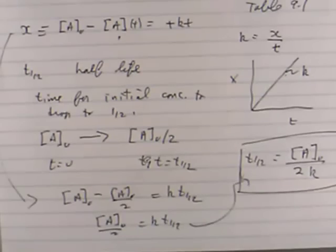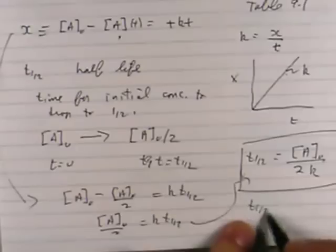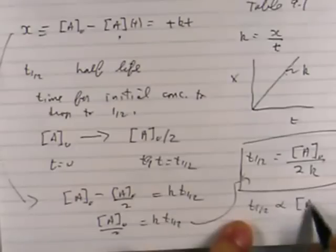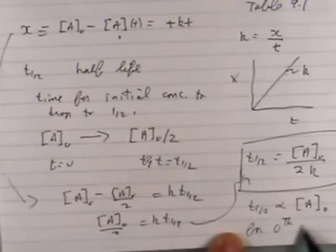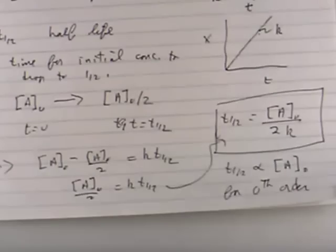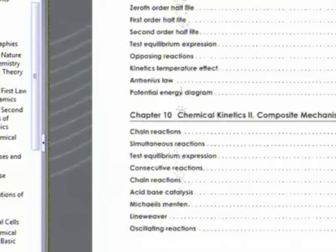So the time for half the material that you start with to decay, T one-half, is proportional to the initial concentration for zeroth order. Zeroth order. So zeroth order half-lives.